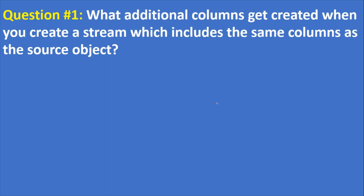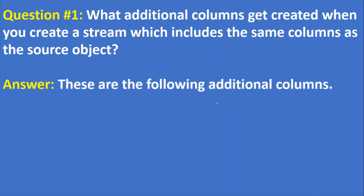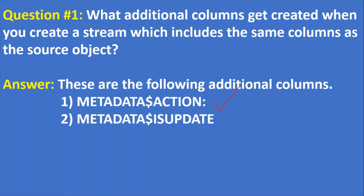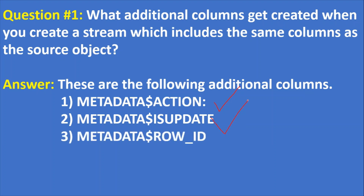Question 1: What additional columns get created when you create a stream, which includes the same columns as the source object? The answer is the following three additional columns will get created when you create a stream. The first one is METADATA$ACTION. The second one is METADATA$ISUPDATE. The third is METADATA$ROW_ID. These are the three additional columns that will get created in a stream.